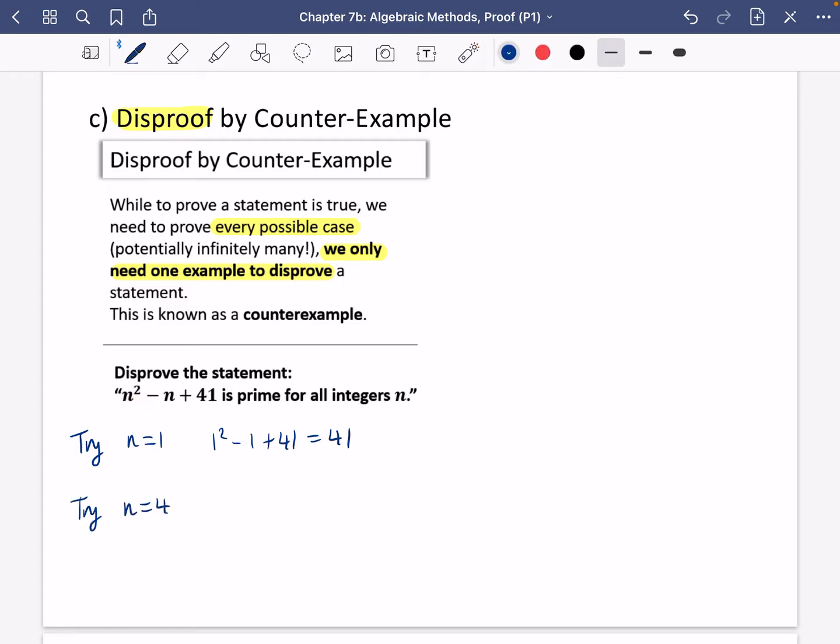If I try that n is equal to 41, we would get 41² - 41 + 41, which is just 41². And so 41² can't be prime as it has 41 as a factor.